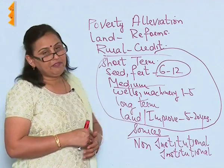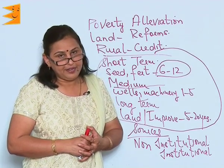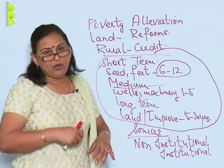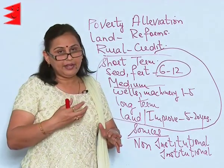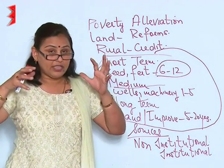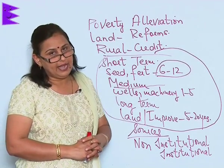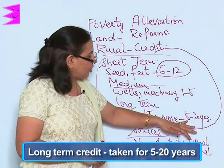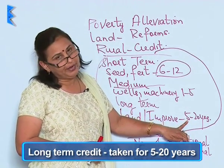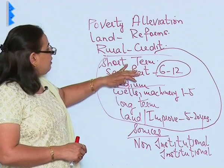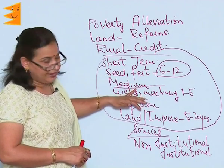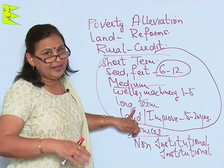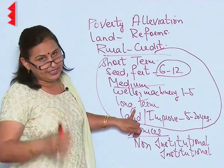Then you have long-term credit in rural India. Long-term credit is generally taken for either buying additional land or bringing about big improvements in existing land, and this kind of loan is taken generally for 5 to 20 years. So there is short-term, medium-term, and long-term credit taken by rural India for meeting their various needs.